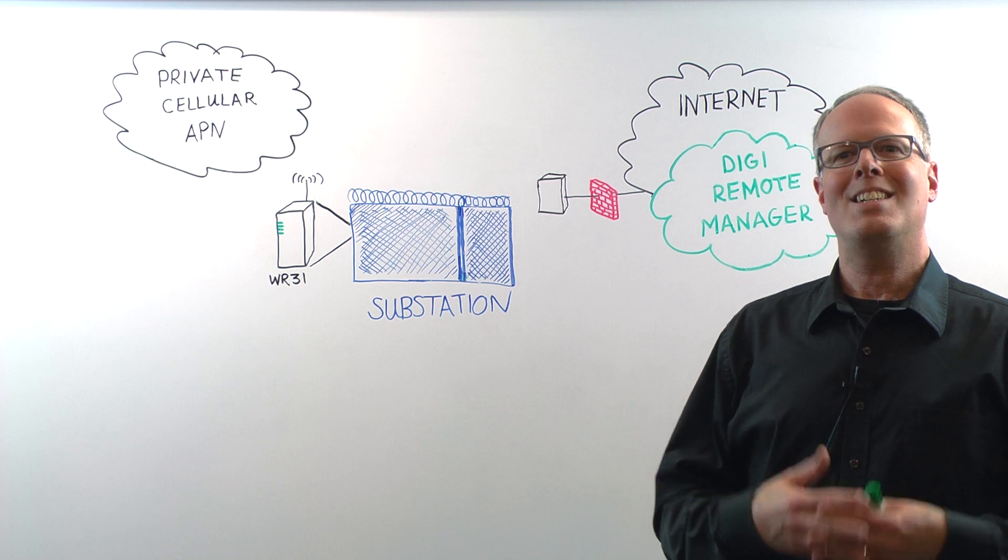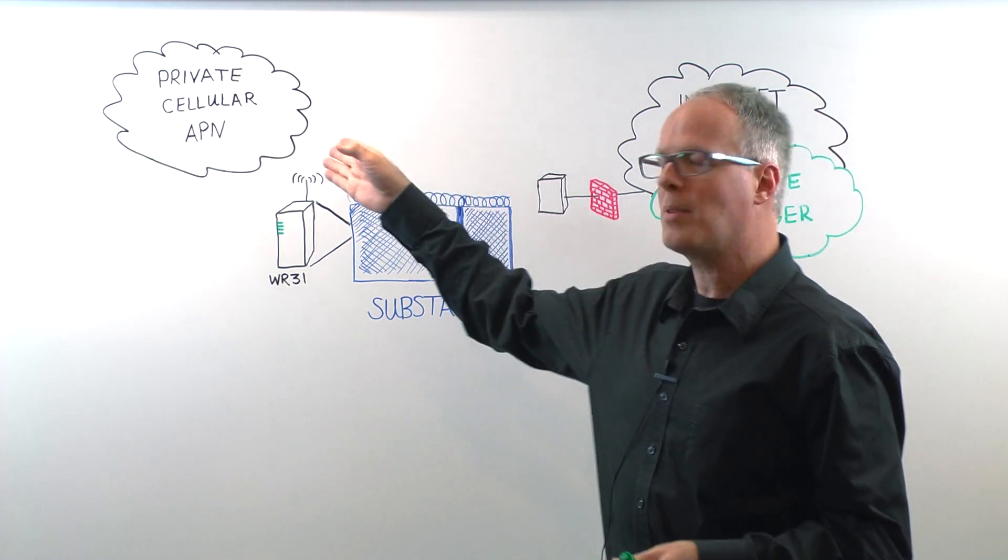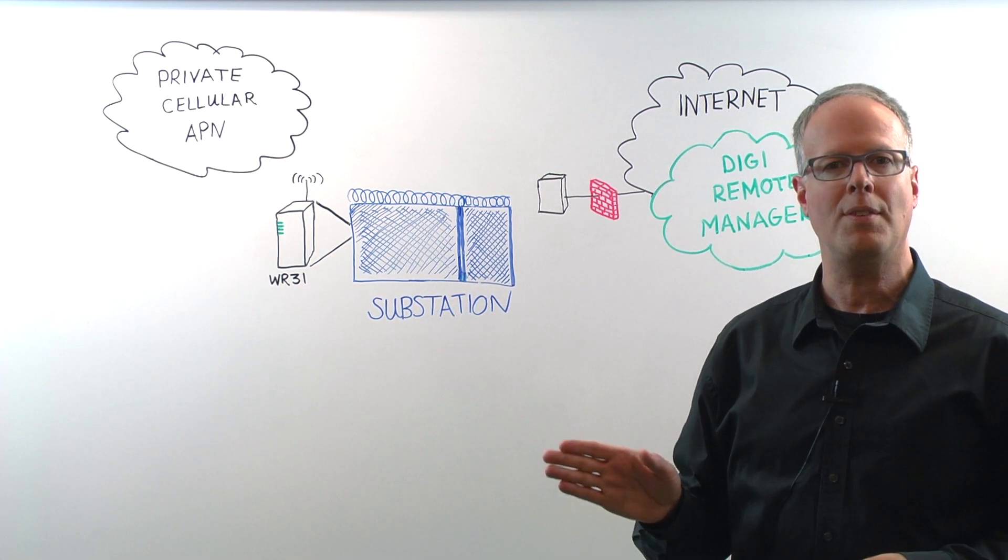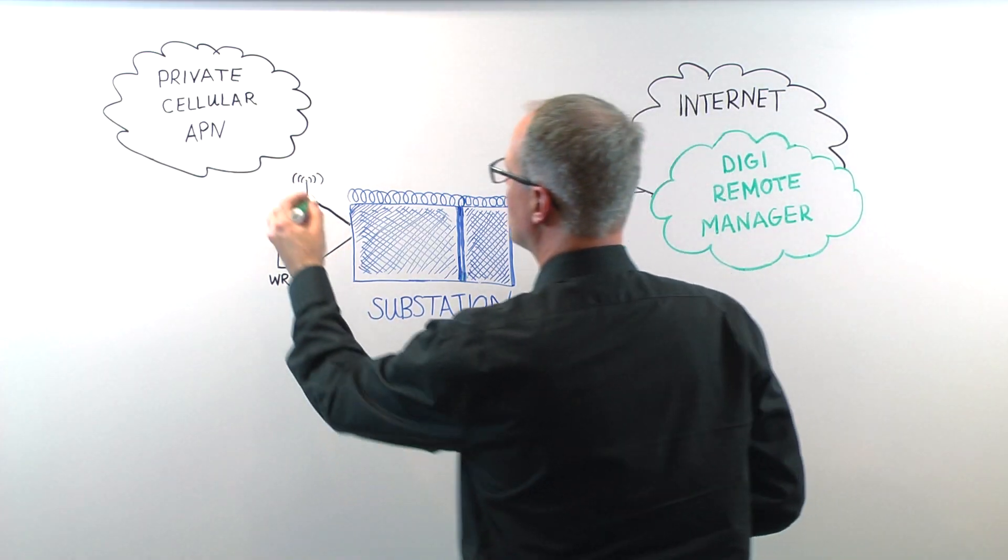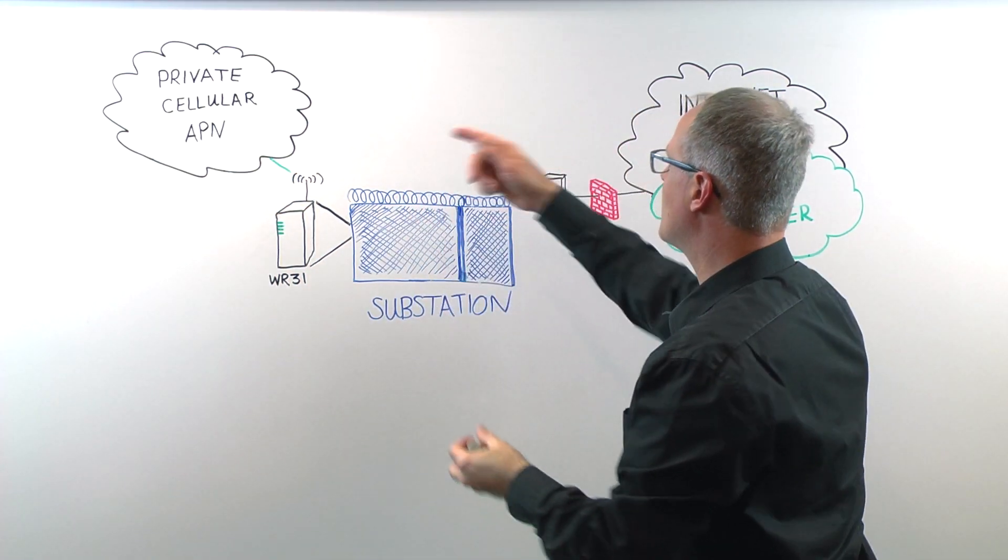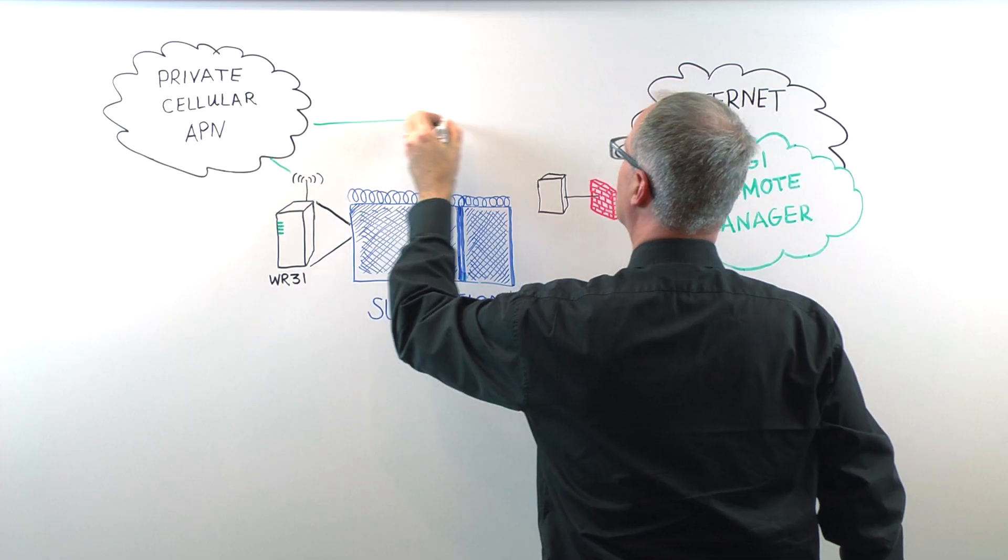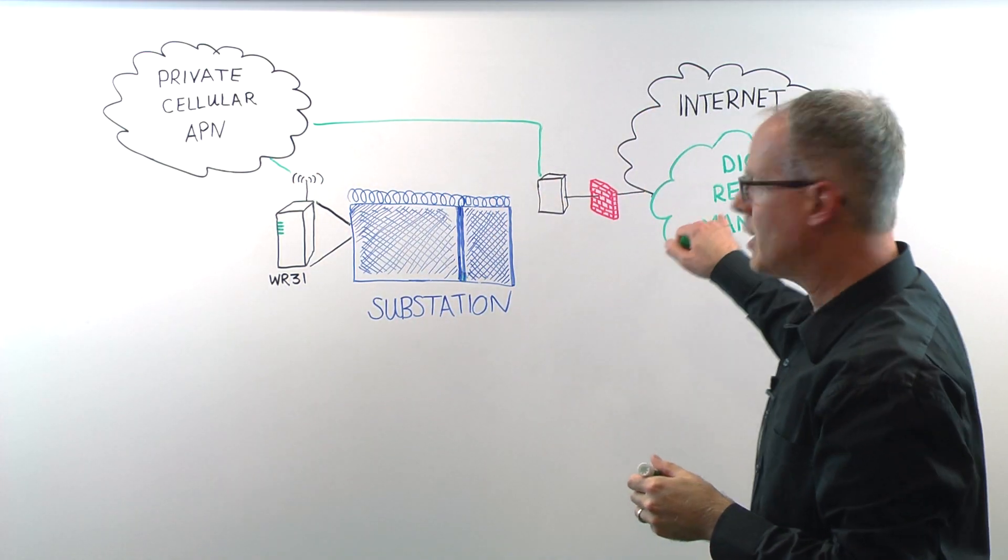If you remember our discussion on secure device management in private cellular networks, we're going to use the same configuration, so for more information on that, please refer back to that video. But we have our Transport WR31 router connected into the cellular network, which in turn connects into a web proxy that gets you out to the internet and ultimately into Remote Manager.